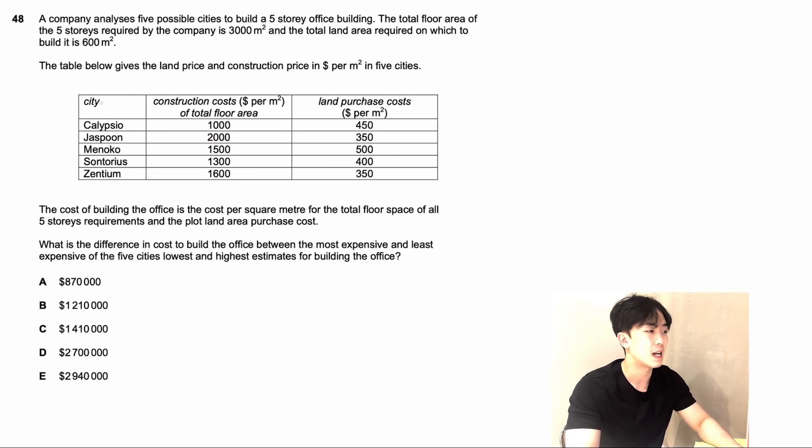Now we have to apply the 2% of that. So 2% of £3,275 will give us a value of £65.50, which the bank charged at the end of August. Question number 48. A company analyzes five possible cities to build a five-story office building. The total floor area of the five stories required is 3,000 meters squared. The land area is 600 meters squared. We got the different prices per meter squared for different cities. What is the difference in cost to build an office between the most expensive and least expensive of the five cities?